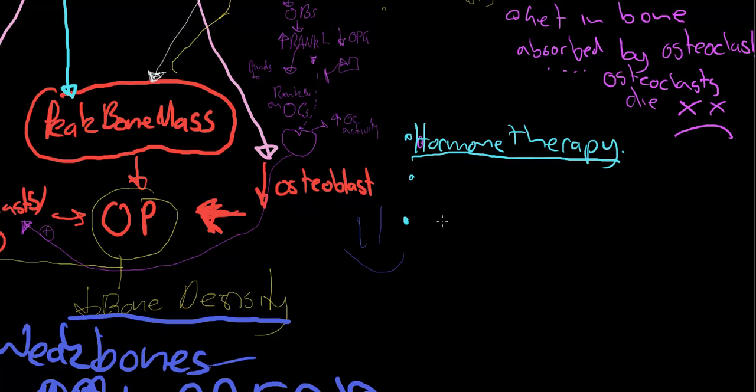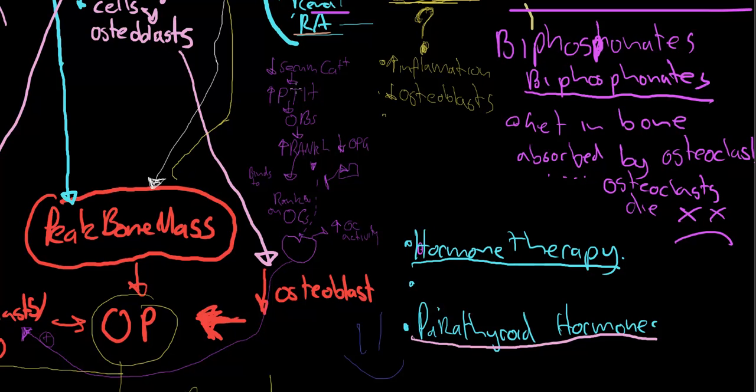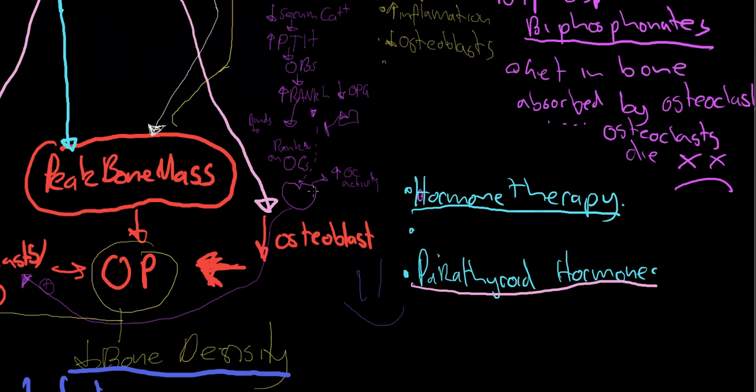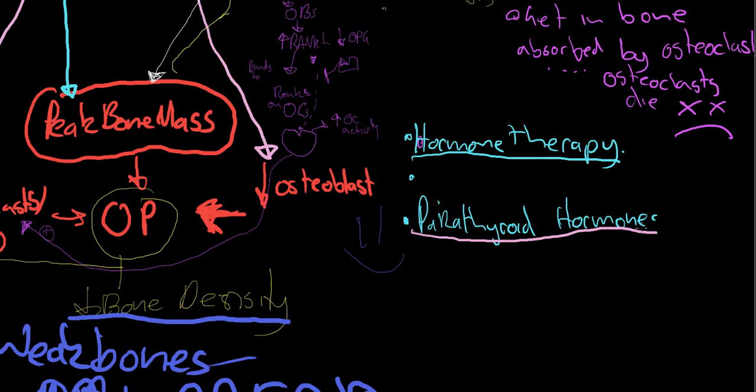The next thing is parathyroid hormone. When I was researching this, I found it really confusing that you give parathyroid hormone for osteoporosis because parathyroid hormone, secreted when you have low serum calcium, causes osteoblasts to make RANK-L and less OPG, which activates osteoclasts, so there's more bone absorption. So why would you give it? I find out that the parathyroid hormone that they give, called teriparatide, is incomplete—it's not the whole thing, it's synthetic.